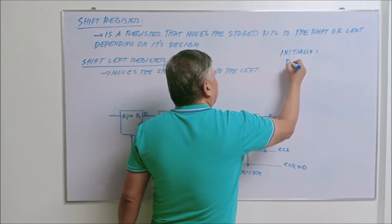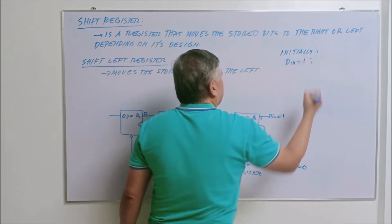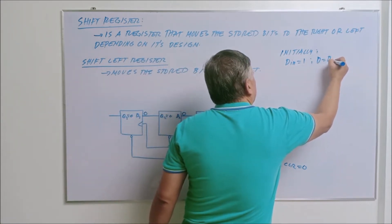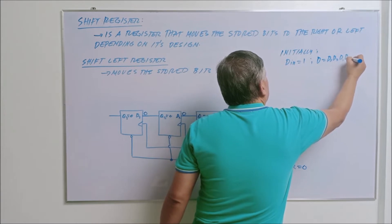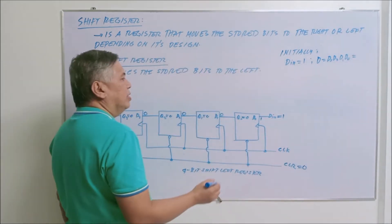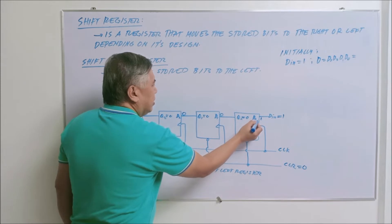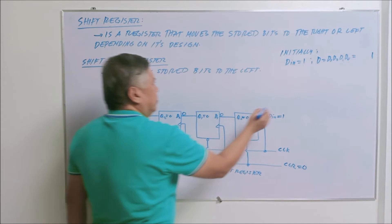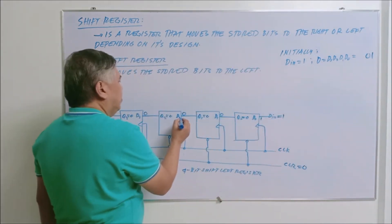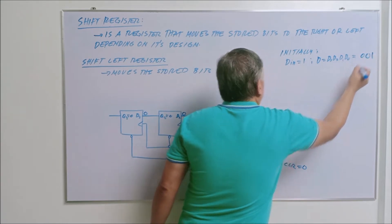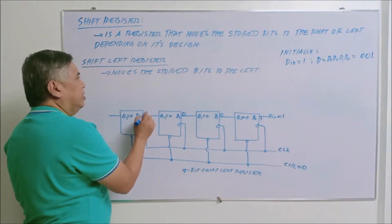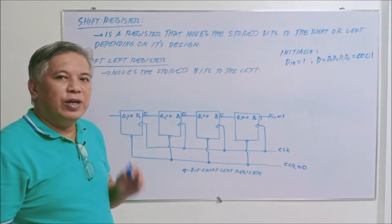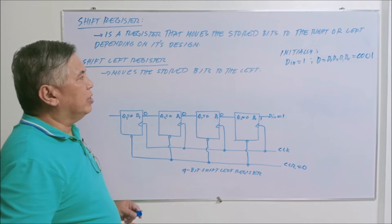So initially, if the input is equal to one, the initial value of D — which equals D sub three, D sub two, D sub one, and D sub zero — will be: D sub zero is one, D sub one is zero, D sub two is zero, and D sub three is zero. That would be the initial value of D before any positive edge triggering of the clock.